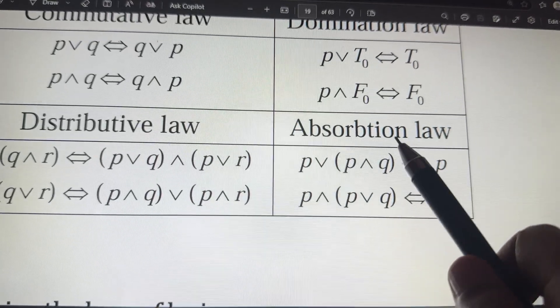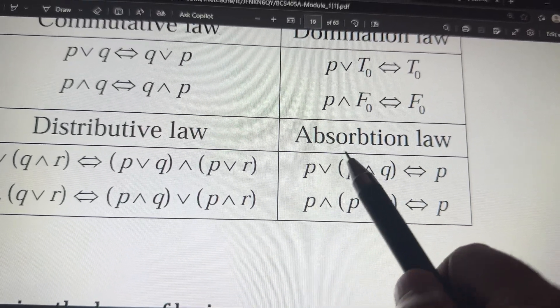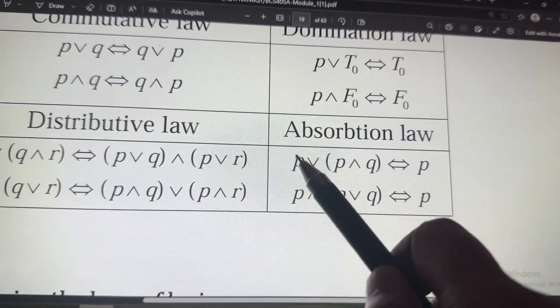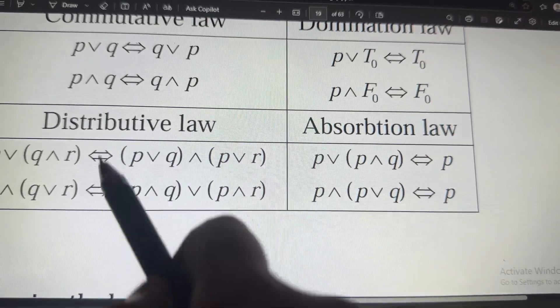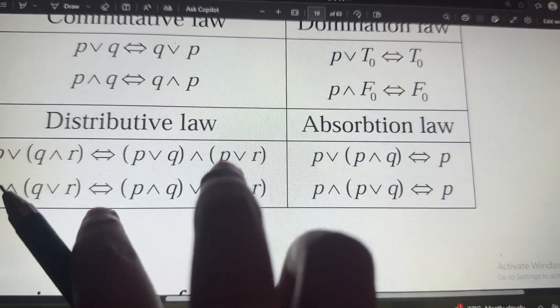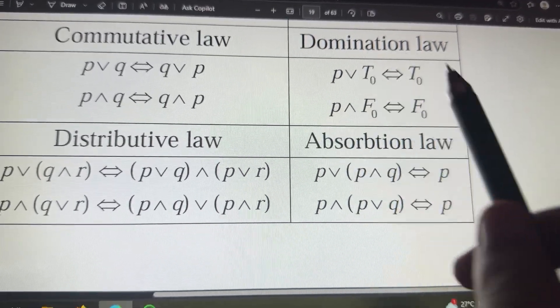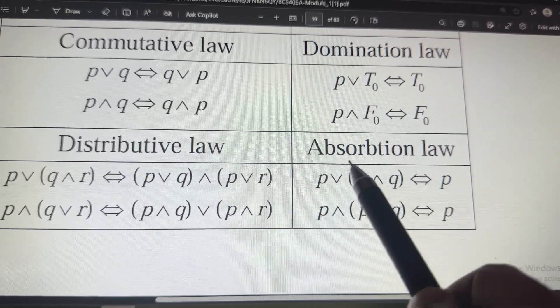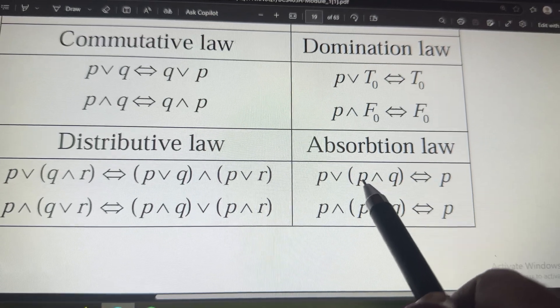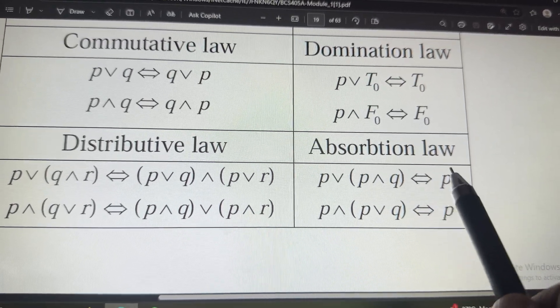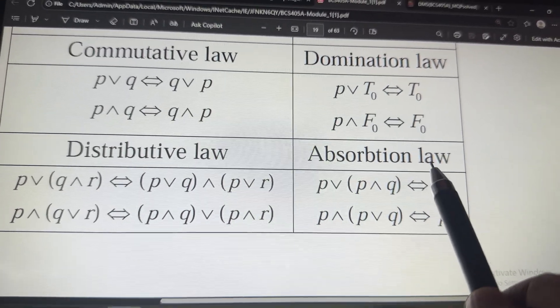Then we have absorption law. Again, it is only two letters. Remember, only in case of distributive law and associative law, we have three letters. In case of absorption law, we have only two letters. So, P or P and Q is nothing but P only. Remember.